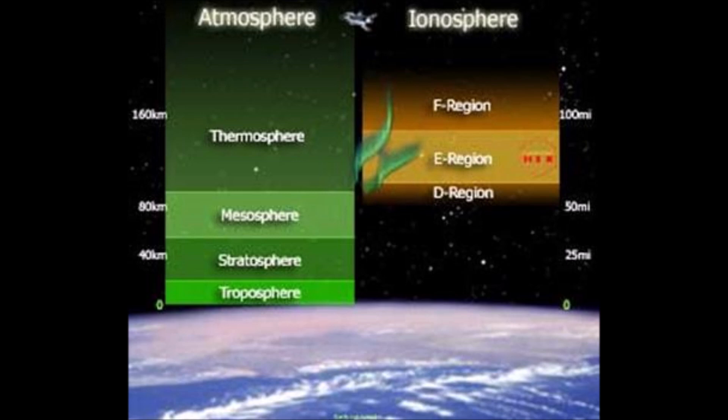So, here I've got a bit of a graphic of the different layers of the ionosphere. The D region, which is the lowest layer, that's about 50 miles above the Earth's surface. The E region, which is in the middle, and then the F region.